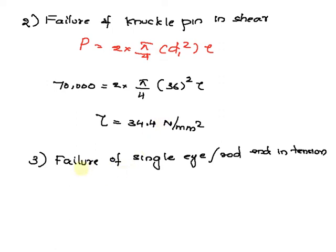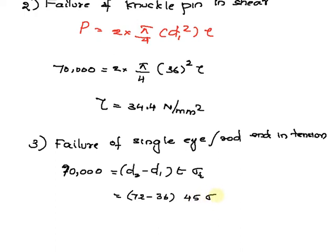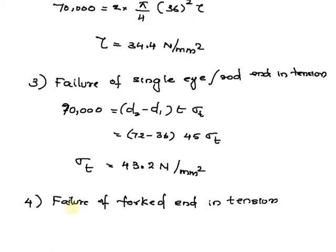Now we will see the failure of single eye or rod end in tension. We can write 70,000 is equal to (d2 minus d1) into t into sigma T, which is equal to (72 minus 36) into 45 into sigma T. From here we get sigma T is equal to 43.4 Newton per millimeter square.